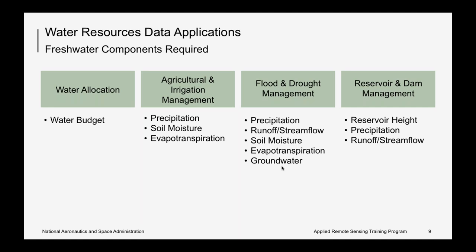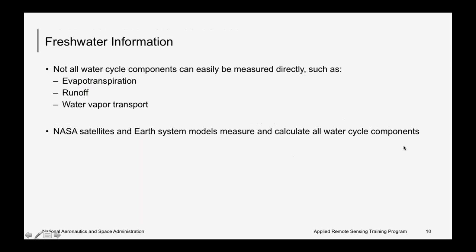Water managers have to distribute the available fresh water for different uses such as domestic, agricultural, and industrial needs. Therefore accurate measurements of each component are very important. Data applications can be for overall water allocation, for which the entire water budget has to be known. In addition, agricultural and irrigation management, flood and drought management, and reservoir and dam management all require information about different water components, ranging from precipitation all the way to evapotranspiration, runoff, and streamflow.